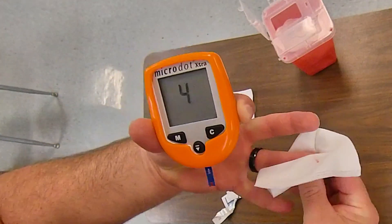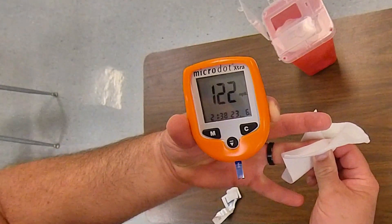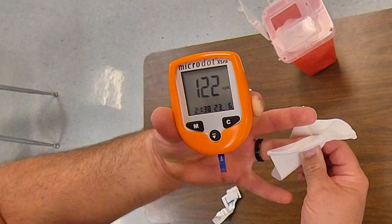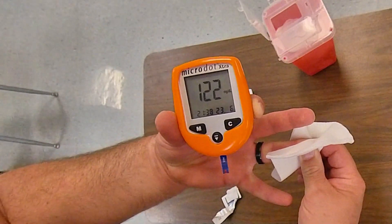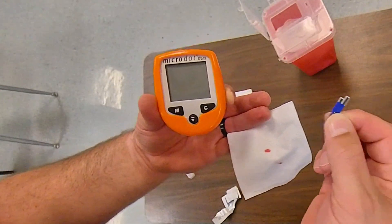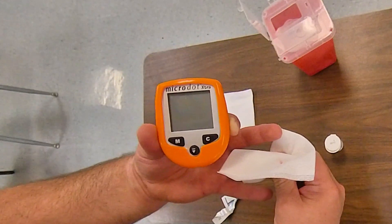I'm going to hold pressure on the bleeding area. Some people put a bandaid on it and my blood sugar is now 122 and that's what we would report on the patient care report. This does not have to go in a sharps container although many times people will put it in there but it should go in a biohazard waste bag.